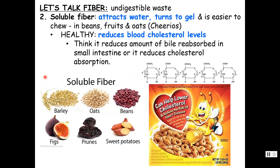Soluble fiber we still can't digest, but it attracts water and turns to a gel — things that soak and change consistency, like beans, fruits, and oats. This is a very healthy fiber because it reduces blood cholesterol levels. The mechanism isn't fully understood, but it's thought to soak up bile salts and cholesterol or reduce cholesterol absorption. You've probably seen the little heart on Cheerios saying it can help lower cholesterol and reduce the risk of heart disease. Soluble fiber — barley, oats, beans — all swell when put in water.